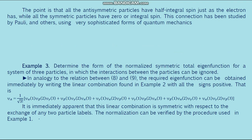If a composite particle has an even number of anti-symmetric constituents, it is symmetric. Example 3. Determine the form of the normalized symmetric total eigenfunction for a system of three non-interacting particles. In analogy with the relation between formulas 8 and 9, the required eigenfunction is obtained by writing the linear combination from Example 2 with all signs positive. This linear combination is immediately apparent to be symmetric with respect to the exchange of any two particle labels, and normalization can be verified by the procedure used in Example 1.